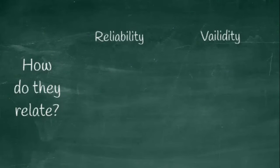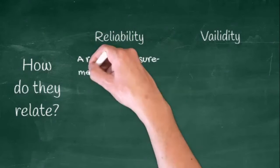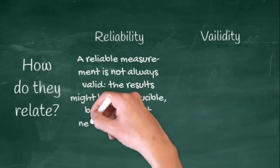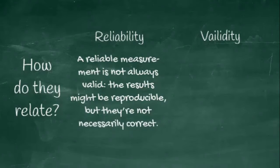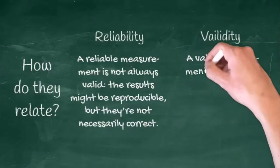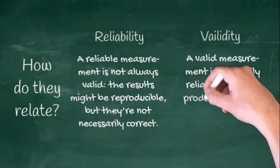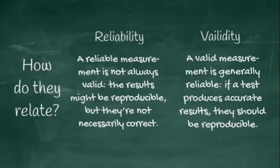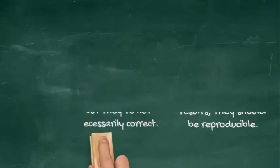It is the relationship between the two. Remember that a reliable measurement is not always valid. The results might be reproducible, but they are not necessarily correct. A valid measurement is generally reliable. If a test produces accurate results, then they should be reproducible.